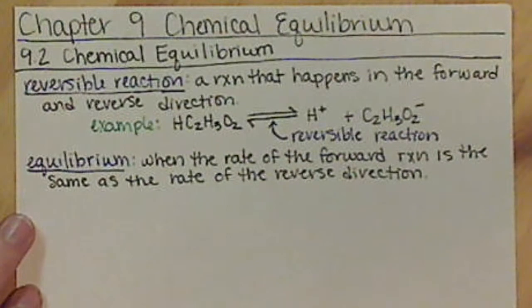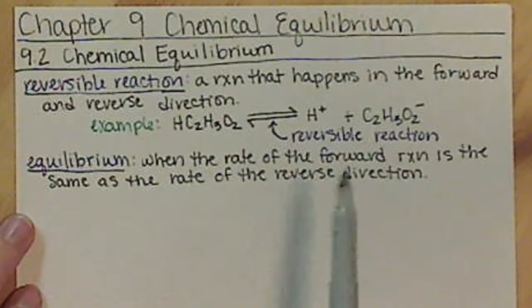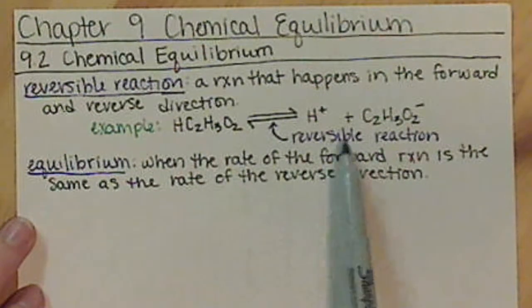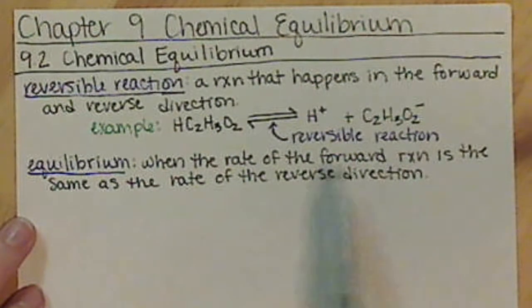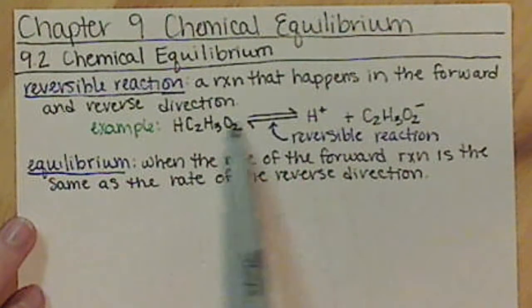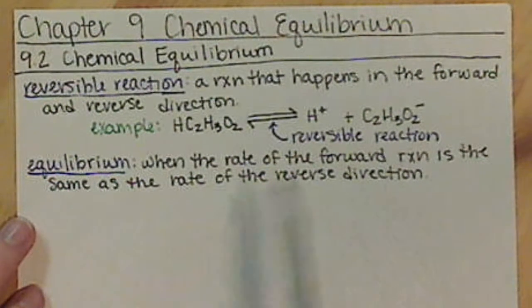Basically, what happens when we observe this is that there's not going to be an overall change in concentration of our reactants and our products. The concentration will remain constant even though we're going back and forth constantly.